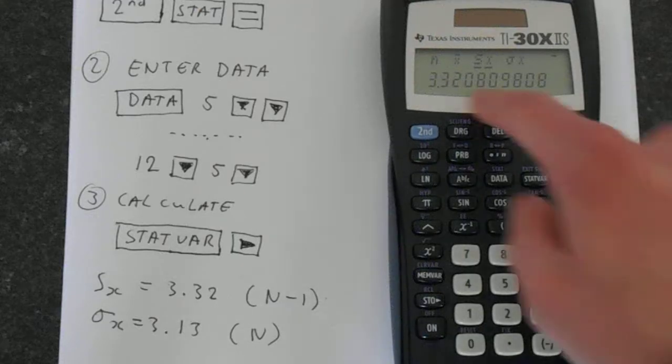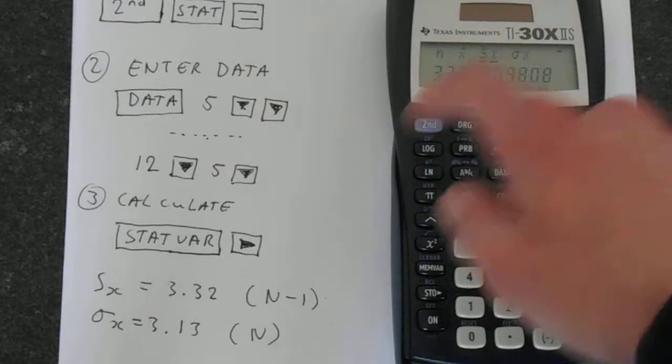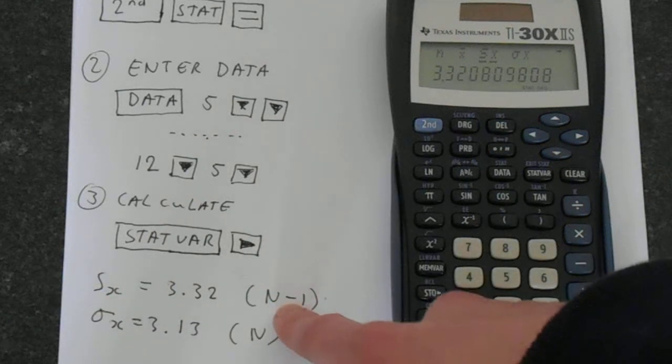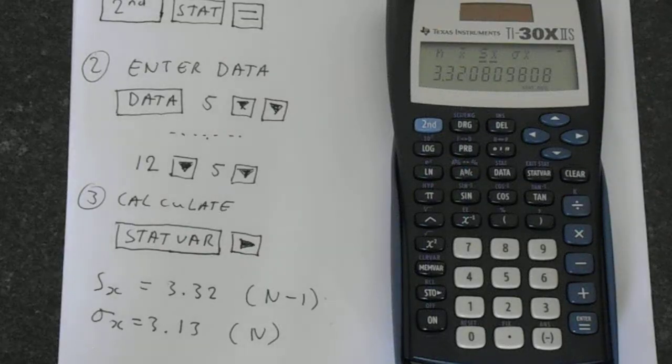Moving down one more time, we've got this 3.32. This is what the calculator calls Sx. This is your standard deviation based on the N minus one definition. You're taking your standard deviation, and on the bottom of the fraction, you've got N minus one.